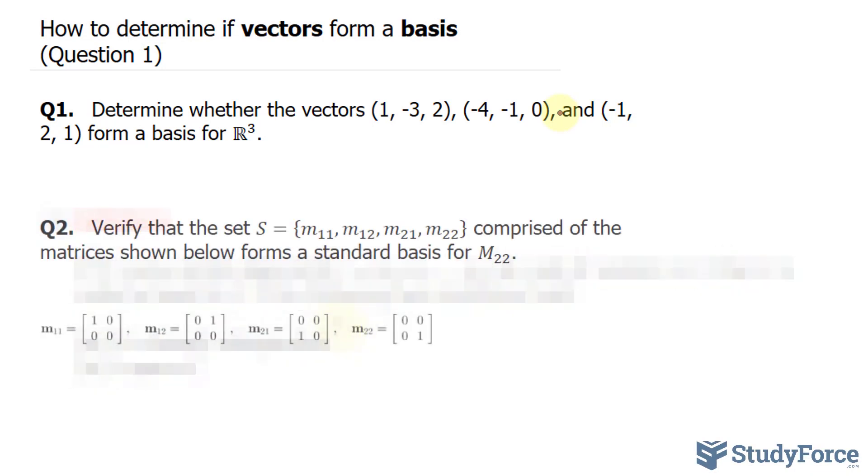Let's start by proving that they span. Now to prove that these vectors span, add them up, multiply them by a scalar, and set that equal to another vector, which has the components a, b, and c. If I can find a number that represents the scalars, then it spans. Let me show you what I mean.